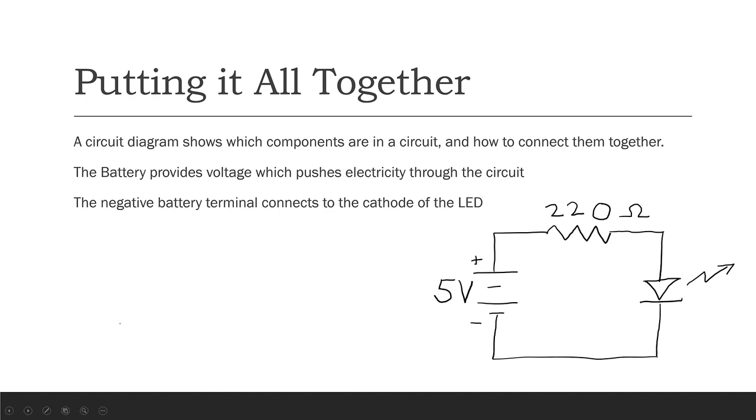The negative terminal on the battery is connected to the cathode on the LED. So let's remember what that means. On the LED, since the negative terminal of the battery is connected to the cathode, that means that there is a negative charge here, and a positively charged wire is connected to the anode.